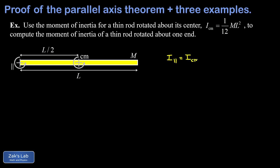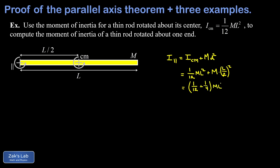Applying the parallel axis theorem: I_parallel equals I_CM plus M d squared, where d is L over 2. So we get one-twelfth m L squared plus M times (L/2) squared. Each term has m L squared in it, so factoring out: one-twelfth from the first term and one-fourth — which is three-twelfths — from the second. Adding one-twelfth and three-twelfths gives four-twelfths, which reduces to one-third. So I_parallel equals one-third m L squared, agreeing with the result from direct integration.